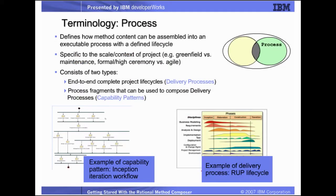A process is the order of the work being performed. Processes take method content elements and relate them into a sequence that is customized to specific types of projects. As we will see later, processes are described in RMC in terms of breakdown structures, also called process views, that refer to method content elements.